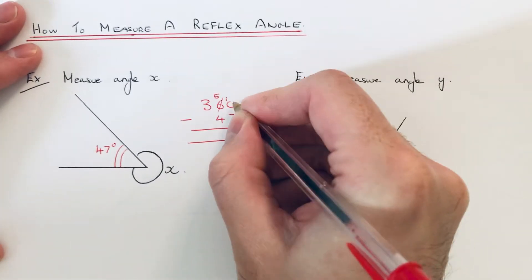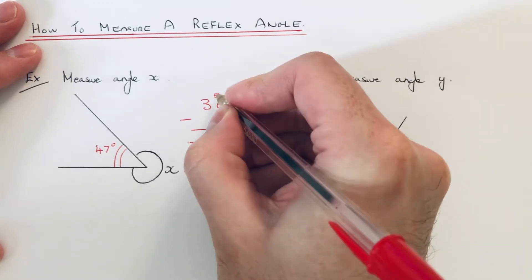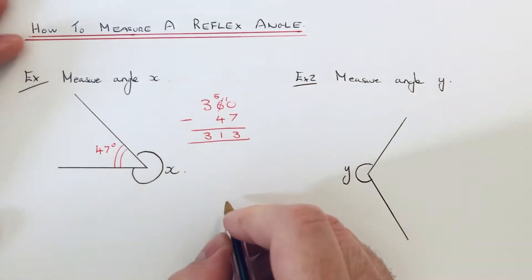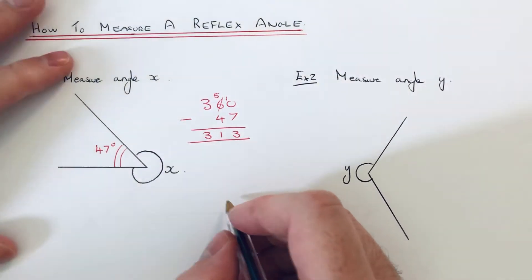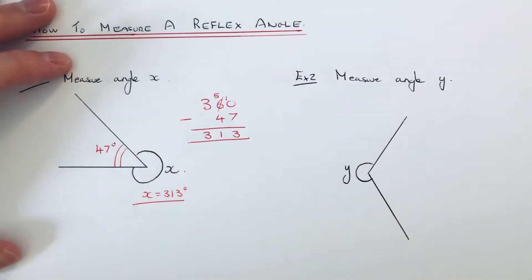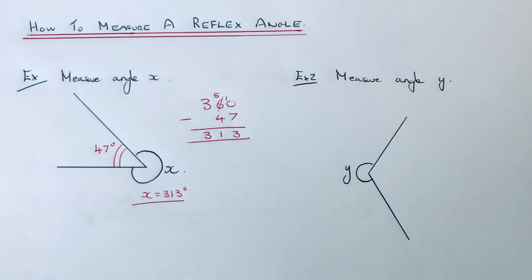7 we can't do. 10 take away 7 is 3. 5 take away 4 is 1. 3 take away nothing is 3. So angle X is 313 degrees. So let's move on to the second example. This time we've